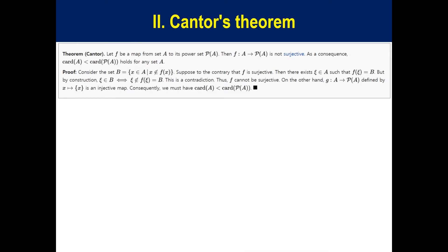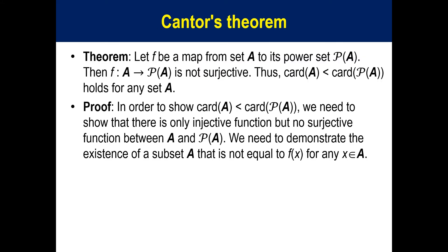Second, Cantor's Theorem. The theorem is two lines long and the proof is three lines long. The theorem states: let f be a map from set A to its power set P(A). Then f mapping A to P(A) is not surjective. Thus, card P(A) being larger than card A holds true for any set A.